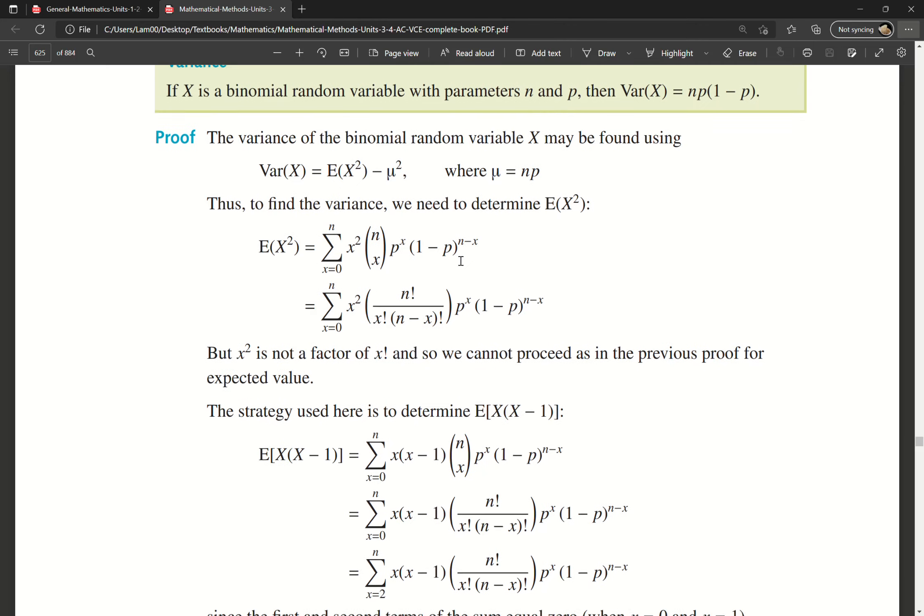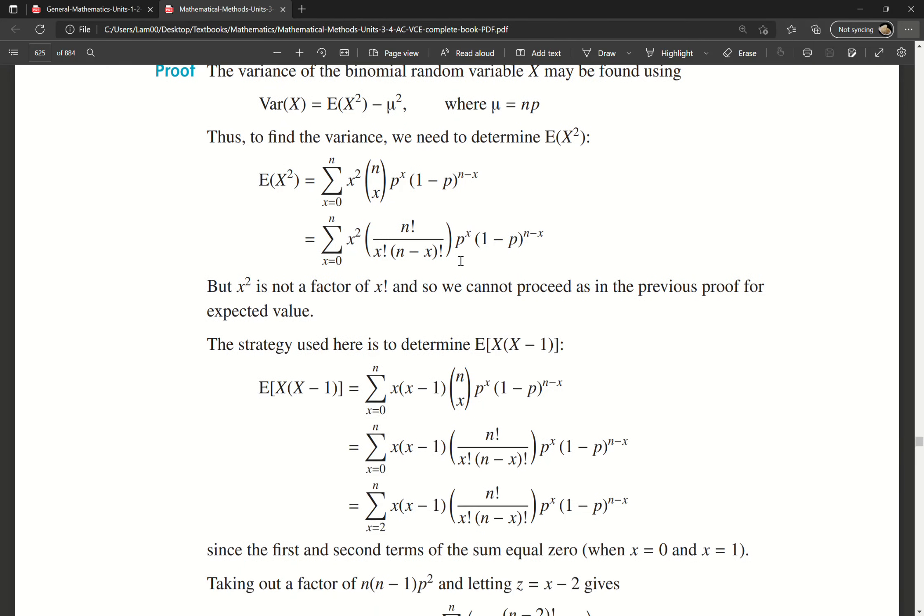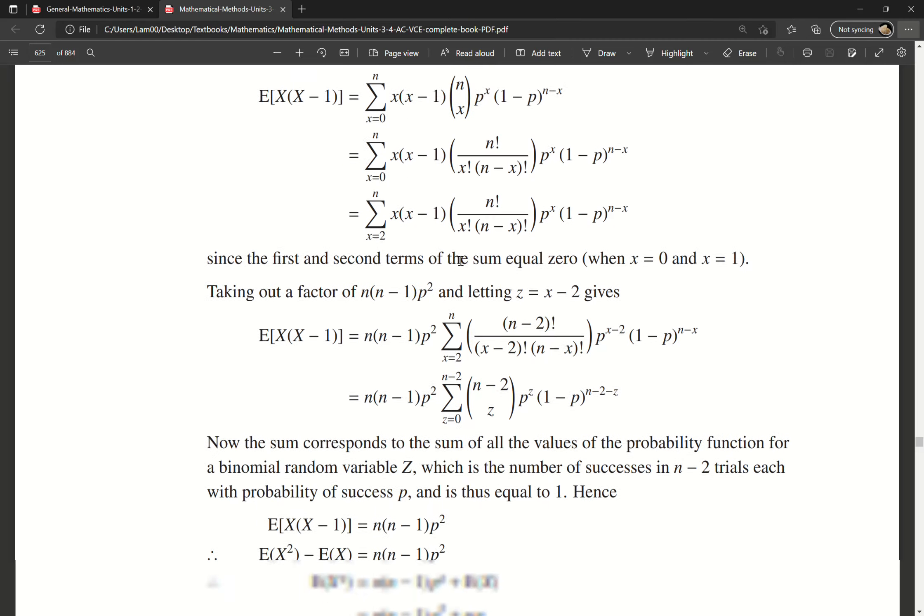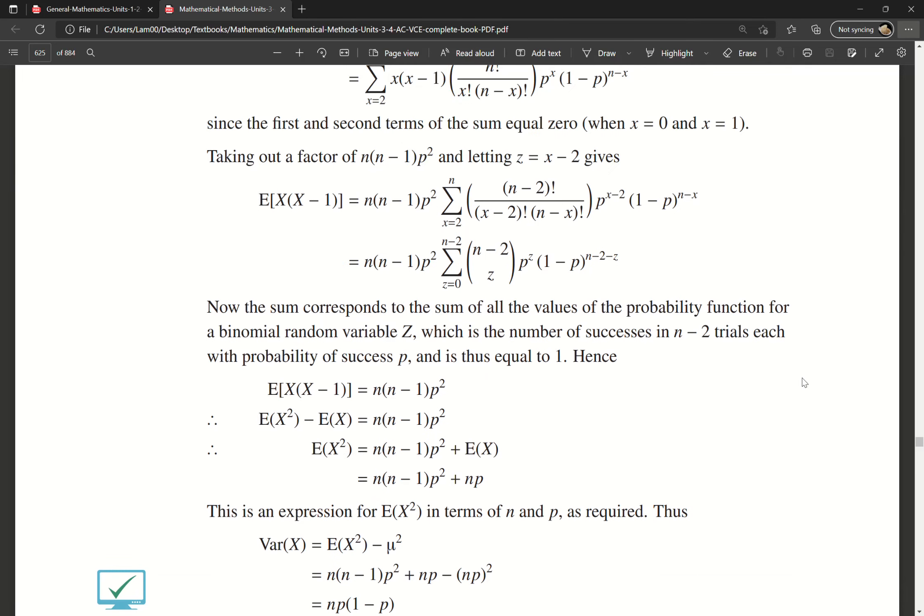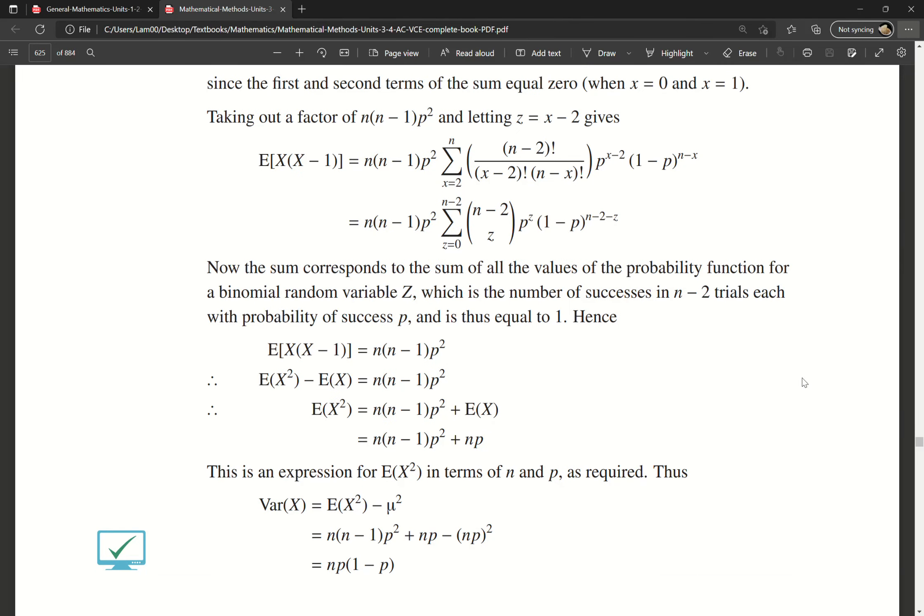Substituting those in, doing the same things with the binomial theorem, ends up simplifying to this here, which we can simplify to end up with np(1-p). So the moral of the story is, all this information – all these formulas for the expected value, the variance, and the idea that all probabilities add up to 1 in the probability distribution – comes from the binomial theorem itself.